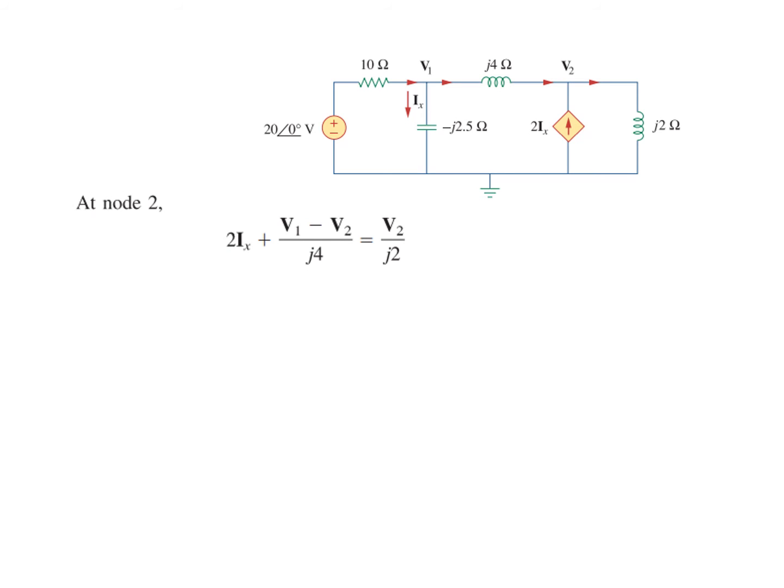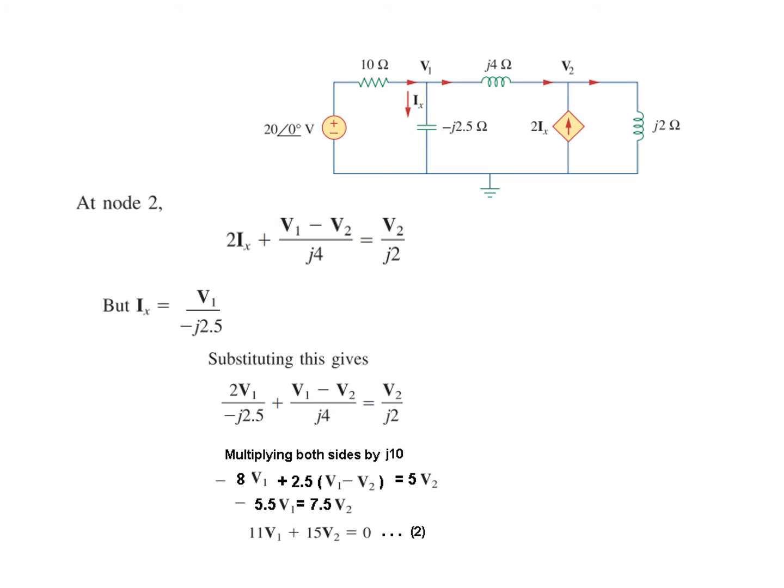At node 2, we have current entering 2ix, plus (v1 minus v2) over j4, and v2 over j2 leaving. We have to replace ix because we want to solve in terms of v1 and v2. From earlier, ix is v1 divided by minus j2.5, so replacing this is our new equation. We multiply this by j10, the LCM. Multiplying by j10 and simplifying, this is the second equation.